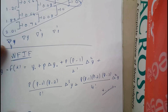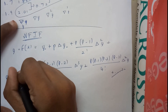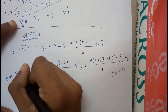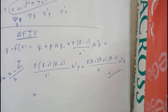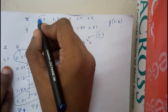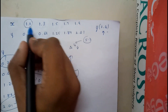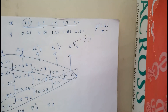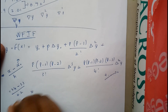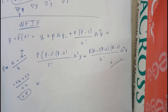The major unknown remaining is p. Using p = (x - x₀)/h: x₀ is 1.1 (the starting value in the table), x is 1.4 (the value we want to find), and h is 0.2 (the common difference between x values). Solving gives p = (1.4 - 1.1)/0.2 = 1.5.